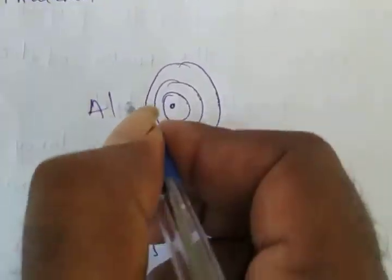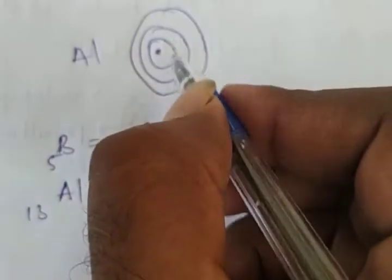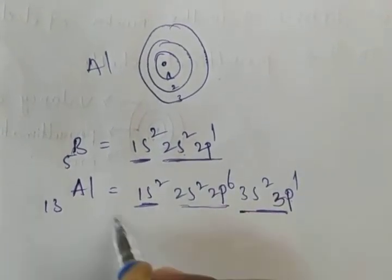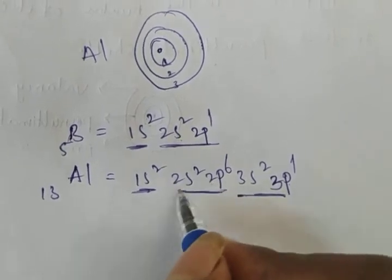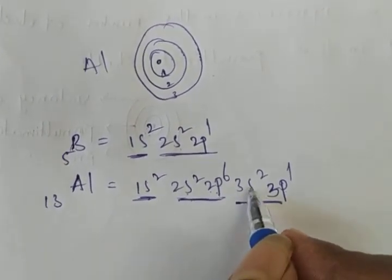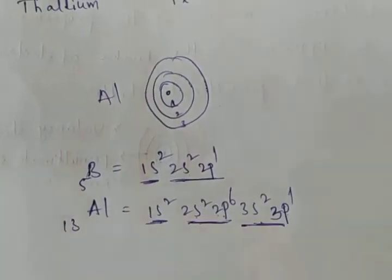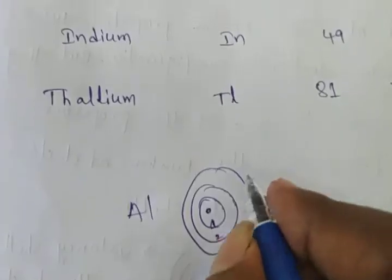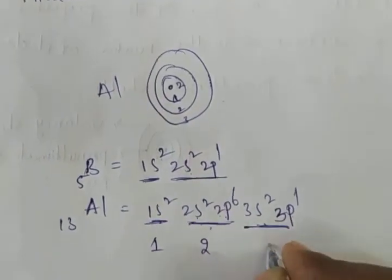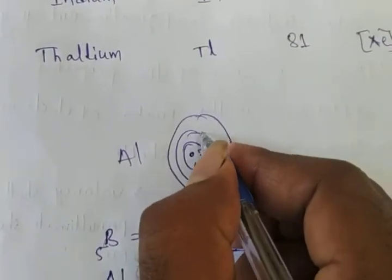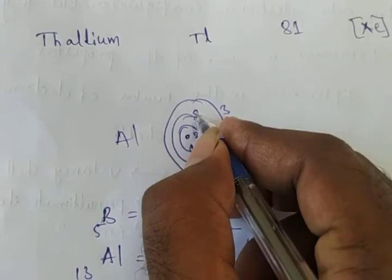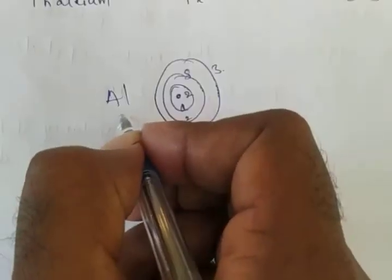Consider the aluminium atom with three shells. The first shell has 2 electrons, the second shell has 8 electrons (2s² 2p⁶), and the third shell has 3 electrons (3s² 3p¹). The valency shell is the third shell, and the penultimate shell — the second shell — contains 8 electrons.